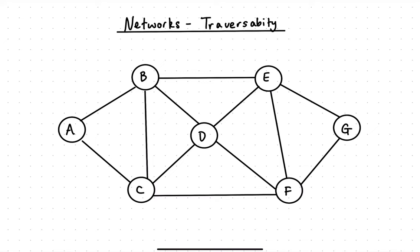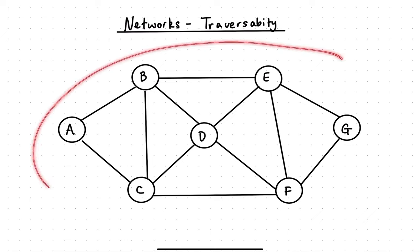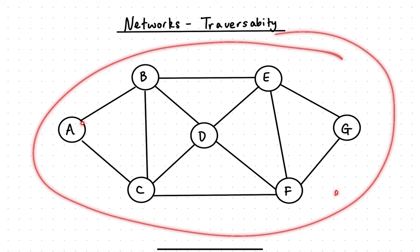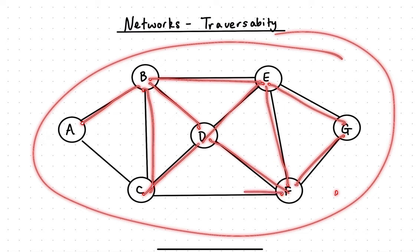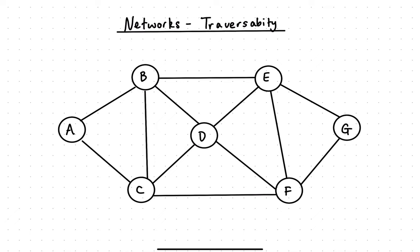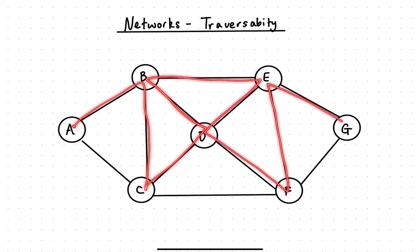Kia ora and welcome to a lesson on level 2 networks, specifically traversability. In traversability we are discussing whether, looking at our network, you can travel around your network along every edge, going along each edge only once, without going along the same edge twice. If you look at the network I've just drawn, I've managed to go along this entire network without going along the same edge twice, in a continuous pattern like so.